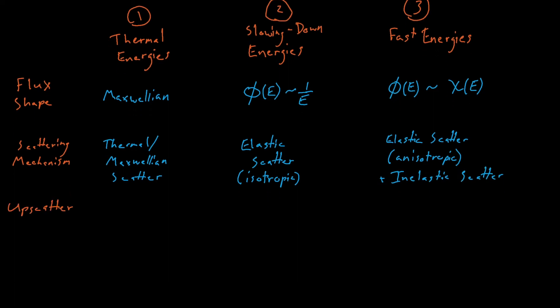Now, what about upscatter? It turns out that we don't have upscatter at fast or slowing down energies, but we do have upscatter at thermal energies. This is because at such low energies, the atoms will sometimes have more kinetic energy than our neutrons, which means that they can actually transfer energy to the neutrons, instead of the neutrons transferring energy to them, which is what usually happens.